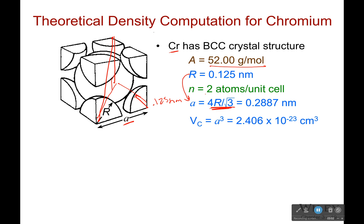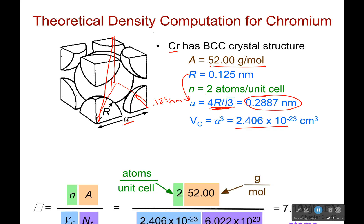So with this, we can put that as 0.2887 nanometers. And we would know what the volume is. So the volume is simply that cubed. So 2.406 times 10 to the negative 23rd centimeters cubed. It is tiny.